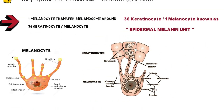To recap the epidermal melanin unit: the melanocyte function is to synthesize melanosomes, which are transferred to adjacent keratinocytes by dendrites. A single melanocyte transfers melanosomes to 36 keratinocytes — this is known as the epidermal melanin unit.